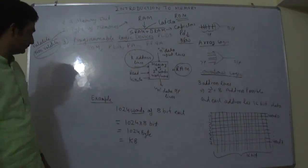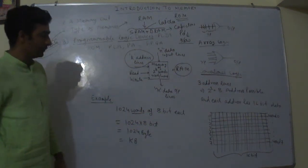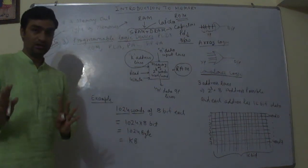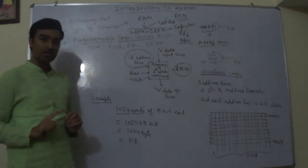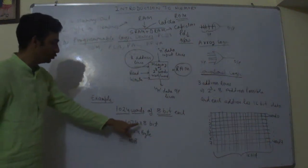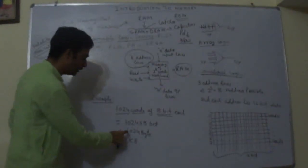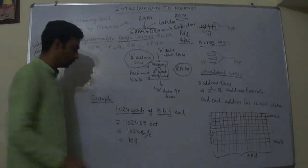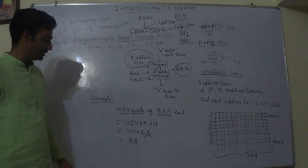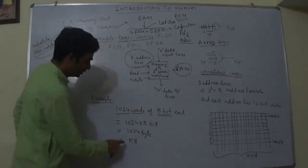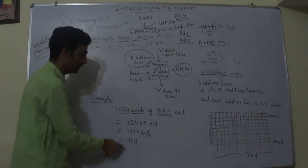Let us take an example. 1024 words of 8 bit each. That means there are 1024 memory locations and each memory location has a width of 8 bit. So that means 1024 into 8 bit. So how much total information will be available there? 1024 byte, because 8 bit is equal to byte, and 1024 in computer language is called kilo. So this is kilobyte of information.